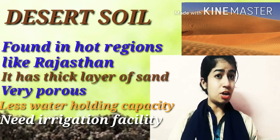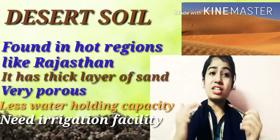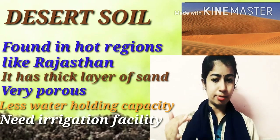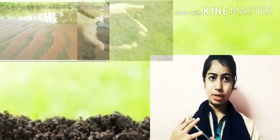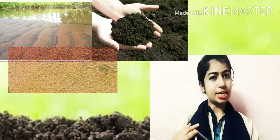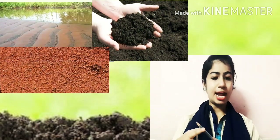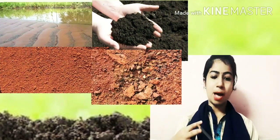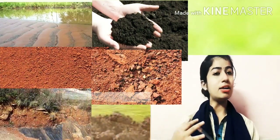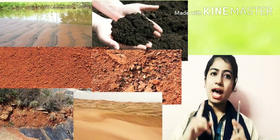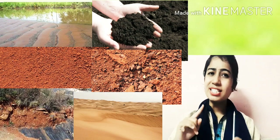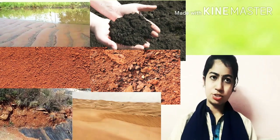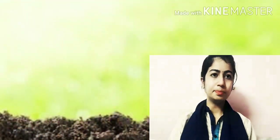So that's all about the types of soil. We have learned about mainly six types of soil: alluvial, black, red, laterite, mountain, and desert soil. You have already seen how these soils look in the pictures.